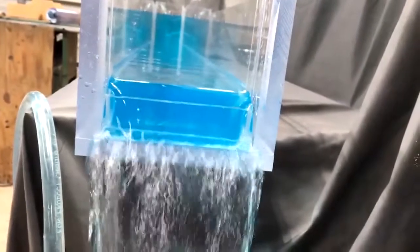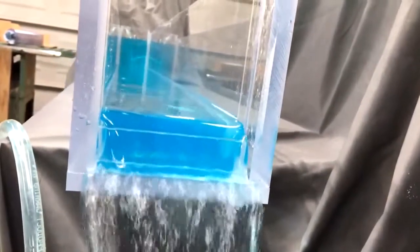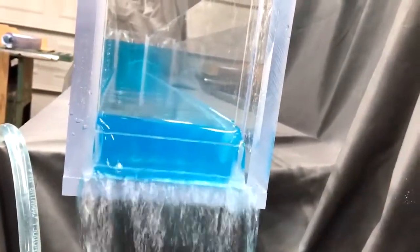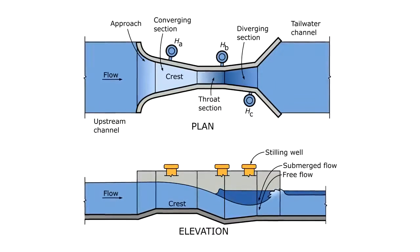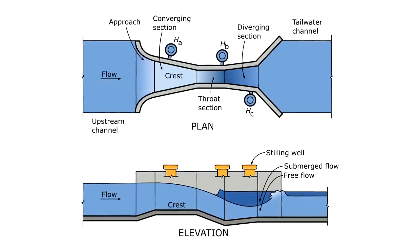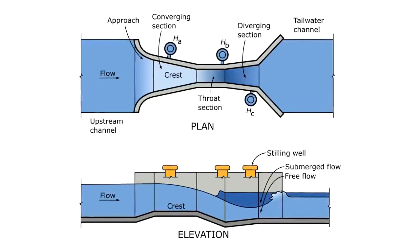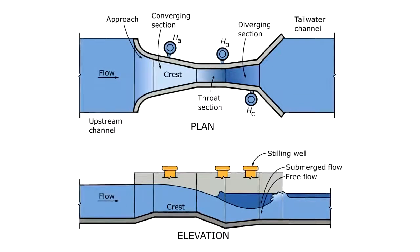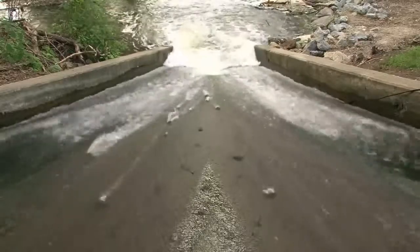A flow profile can naturally transition from subcritical to supercritical — that is, from slow to fast — for example, if a channel changes to a steeper slope or a cliff. Many types of flow measurement devices rely on forcing a flow to transition from subcritical to supercritical because there will be a unique relationship between the flow rate and the depth for a given geometry. Maybe we'll talk more about flow measurement in a future video.